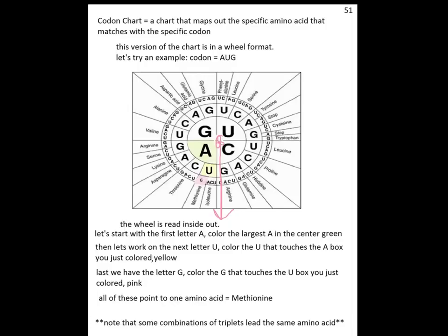I've already colored mine. And when you're coloring, we're only going to be focusing on that particular section of the wheel. So what I mean by that is everything else that's not touching this A is going to be unimportant.